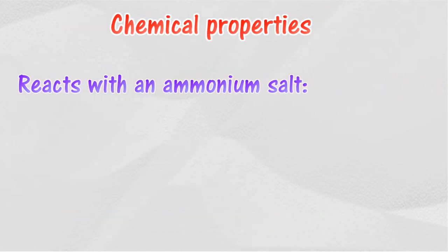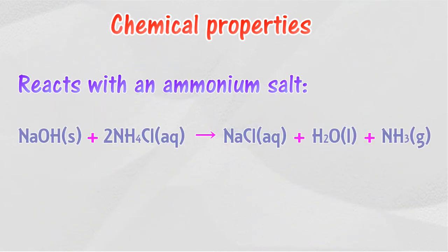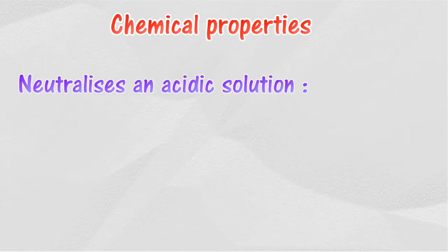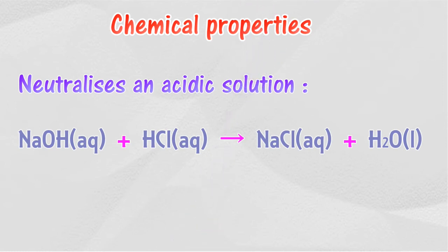An alkali reacts with an ammonium salt to produce salt, water, and ammonia gas. For example, sodium hydroxide reacts with ammonium chloride to produce sodium chloride, water, and ammonia gas. An alkali also neutralizes an acid to form a salt and water only. For example, sodium hydroxide reacts with hydrochloric acid to form sodium chloride and water.